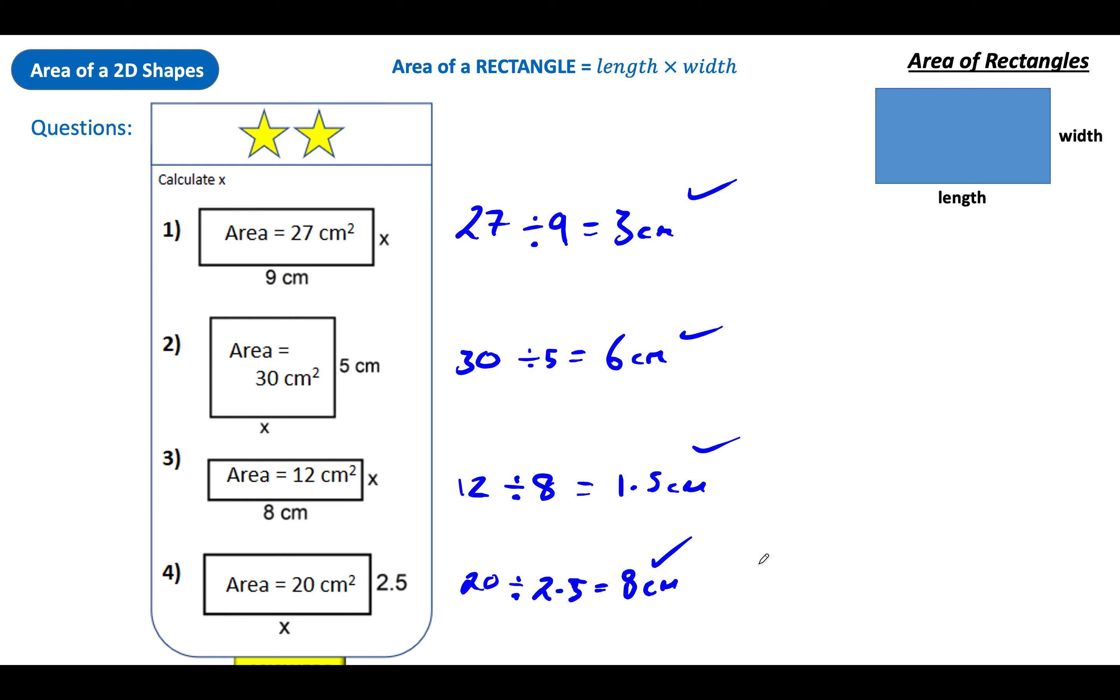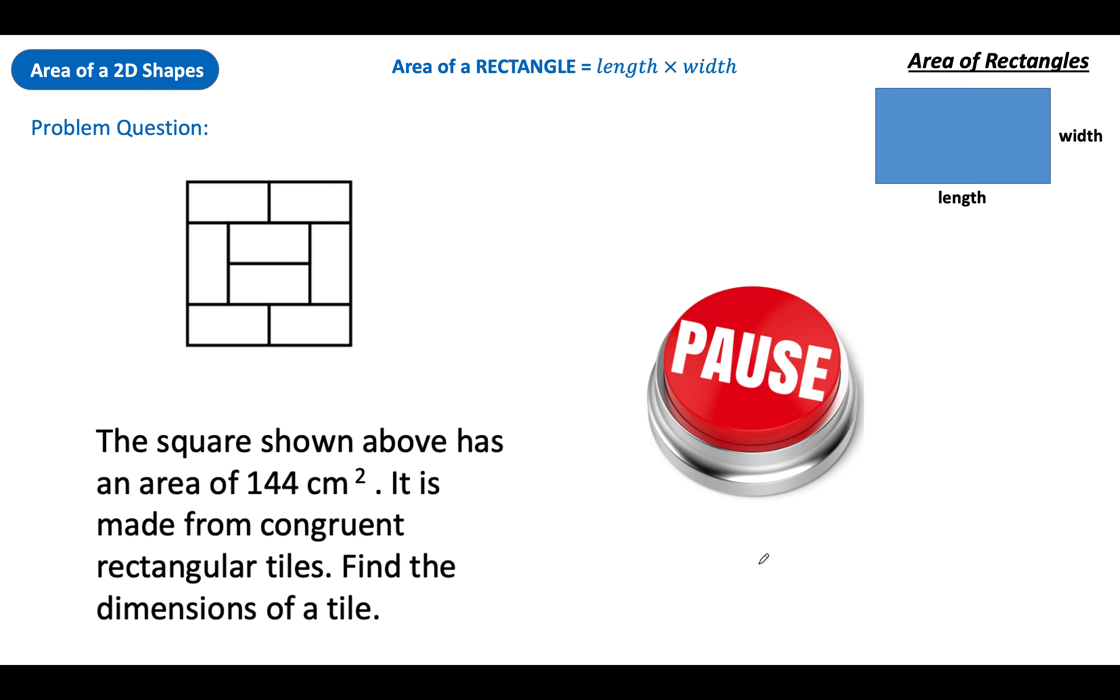That's it for today. Oh no, it's not. Haha, tricks you. We've got a problem question here. I'm just going to tell you what one word means. Congruent means identical, especially in maths when we're talking about shapes. The square above has an area of 144 centimetres squared. It is made from congruent, so identical, rectangular tiles. All of these rectangles are the same. Find the dimensions of a tile. I want you to puzzle over this one a little bit. If the whole area is 144, what's one rectangle? But I want to find the dimensions, the side lengths of each rectangle, the length and the width. It is possible, so have a go. At least find out what one rectangle is, then try and find out what the dimensions are.